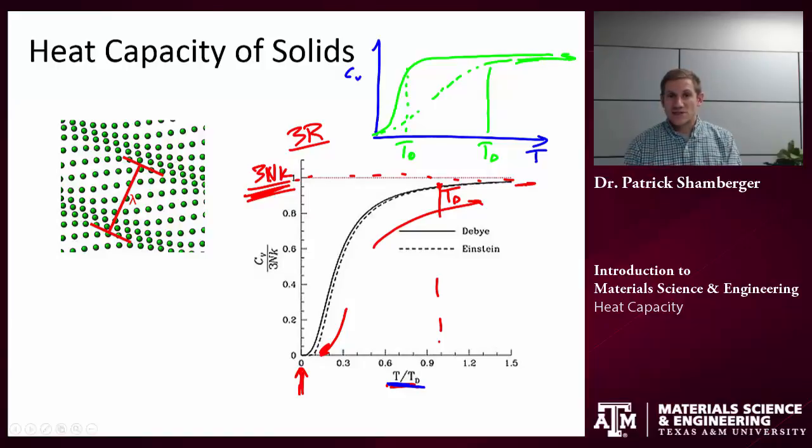If I renormalize by the Debye temperature, then I actually see quite good correspondence between different materials on this kind of a chart. I could plot it up and I could see metals, and I could see semiconductors, and I could see ionic materials, and they all would tend to follow this same universal curve.